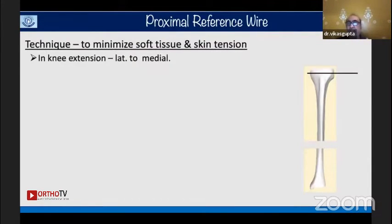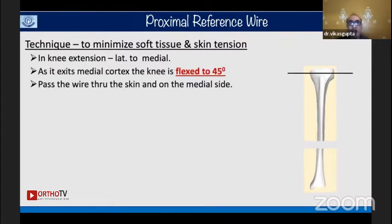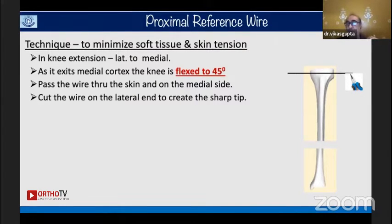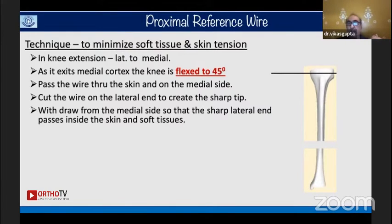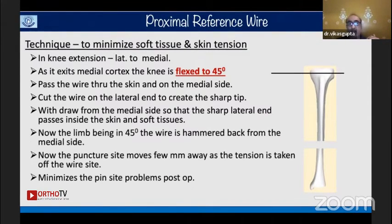To minimize wire tension and movement, with the knee in extension pass the wire from lateral to medial. As it exits the medial cortex, before exiting the skin flex the knee to 45 degrees, then tap the wire through the skin on the medial side. Cut the wire on the lateral side to create a sharp tip, then withdraw the wire from the medial side. With the knee at 45 degrees of flexion, hammer the wire back from the medial side. This moves the puncture wound a few millimeters away as tension is taken from the wire, reducing loosening and pin site infection.